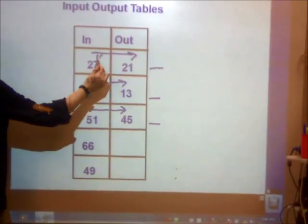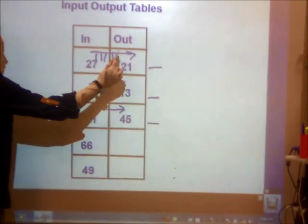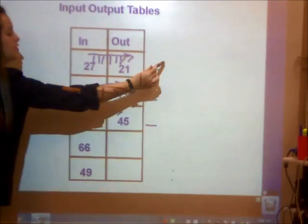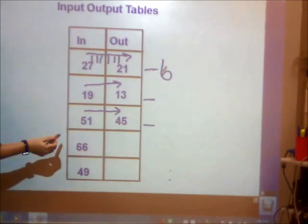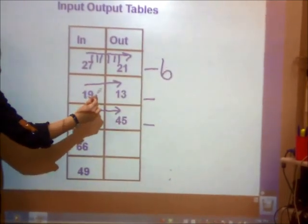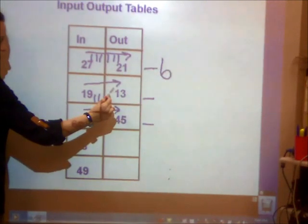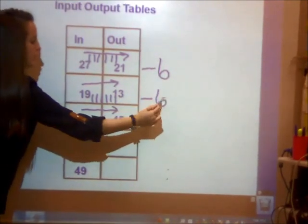Let's use tally marks. 27, 26, 25, 24, 23, 22, 21. I took away 6 from 27 to get to 21. Let's try it with our next one. 19, 18, 17, 16, 15, 14, 13, minus 6.